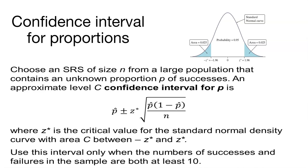And some caveats here. Use this interval only when the number of successes and failures in the sample are both at least 10. This really relies on some more assumptions about that normal distribution and really that z table where you're getting those values.